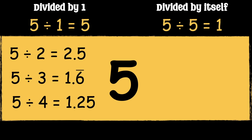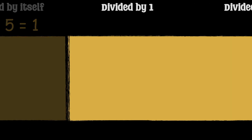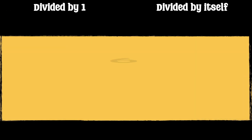Let's see what numbers we can divide 5 by. 5 can only be divided by 1 and itself, so 5 is a prime number.